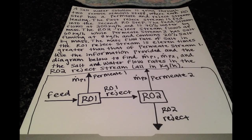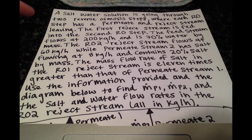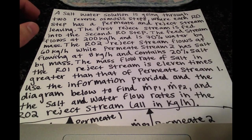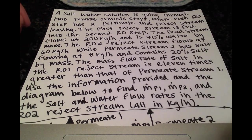Greetings! We are back with another material balance problem and this is a two-step process with much more information as you can see here. So let's take a look. As usual, let's transform this long paragraph of words into useful information and solve our problem. We have a saltwater solution going through two reverse osmosis steps and each step has a permeate and reject stream.